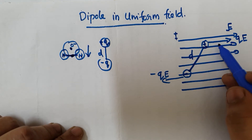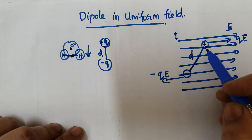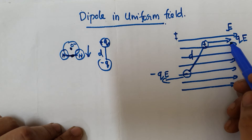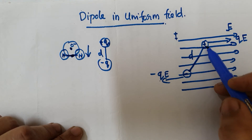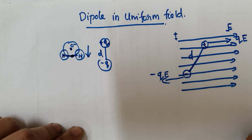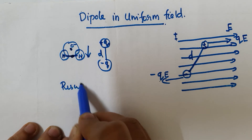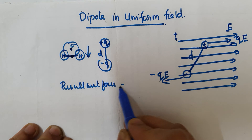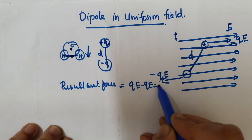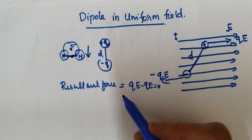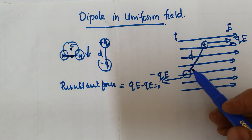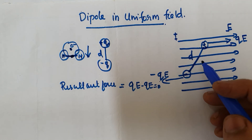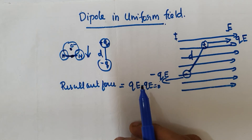In the presence of a uniform electric field, the dipole experiences two forces. The plus q side experiences a force along one direction and the minus q side experiences a force in the opposite direction. The resultant or net force is qE minus qE, which equals zero. Since the field is uniform, the forces on the positive and negative charges cancel each other, giving a net force of zero.